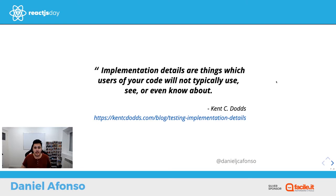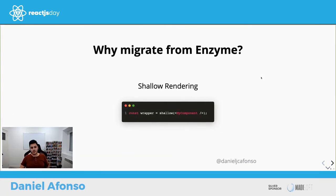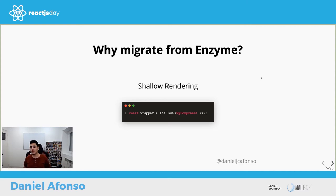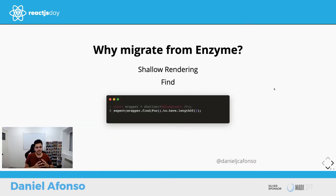Here are three examples of things we found in our tests that encourage testing implementation details. First, shallow rendering — Enzyme renders only the component's superficial part and won't render children. Testing like this is not how the user interacts with your component; the user interacts with it in its entirety, including children.